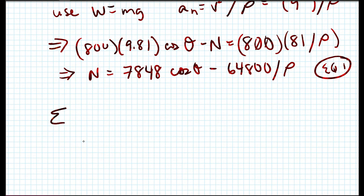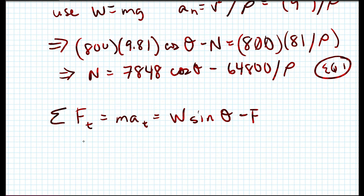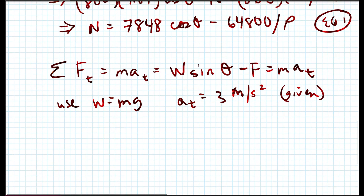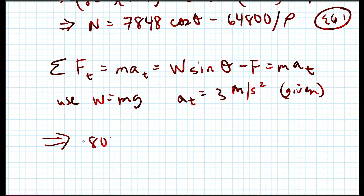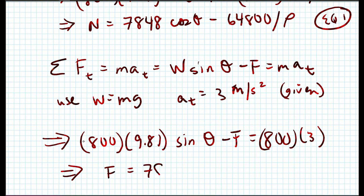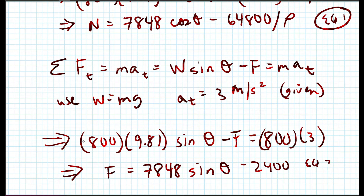For the tangential direction: ΣF_t = ma_t, giving W sinθ − F = ma_t. Using W = mg and a_t = 3 m/s² (given), we get 800 × 9.81 sinθ − F = 800 × 3. Solving: F = 7848 sinθ − 2400. This is equation two.